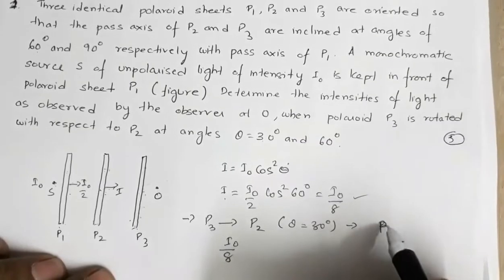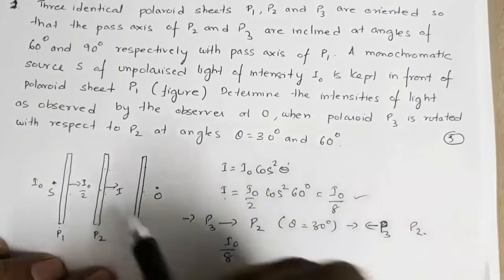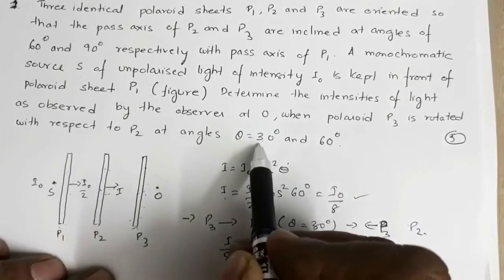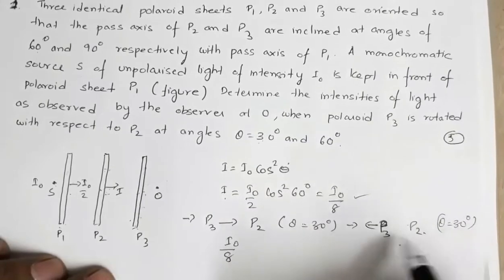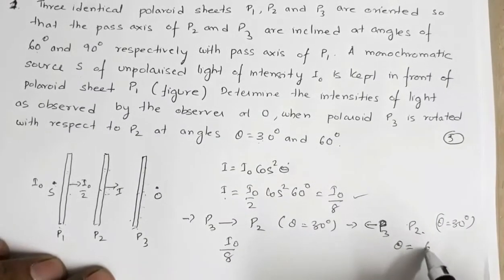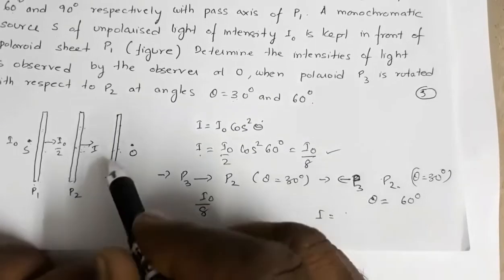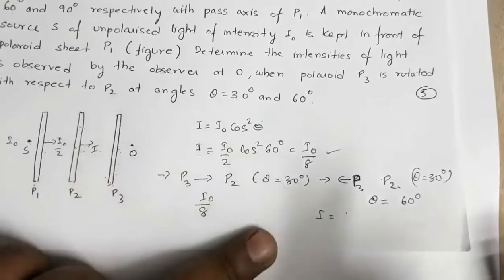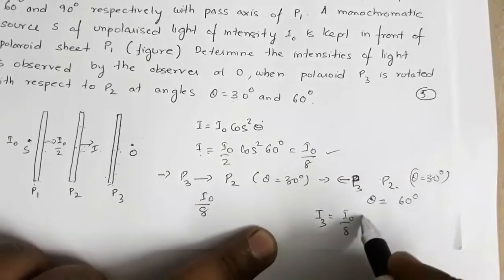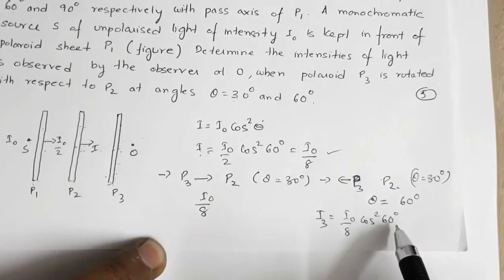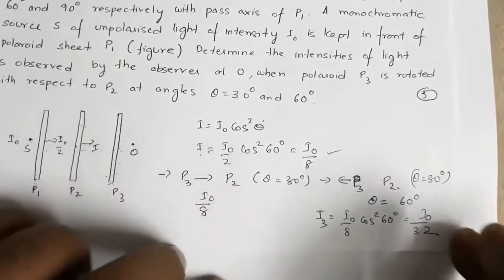When P3 is rotated through 60° towards P2, it crosses P2 and the separation becomes 30°. The intensity emerging from P3 is i3 = (i0/8)·cos²30° = (i0/8)·(3/4) = 3i0/32. If P3 is rotated 60° away from P2, the angle between them becomes 90°, so i3 = 0 since cos²90° = 0.